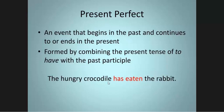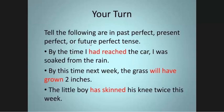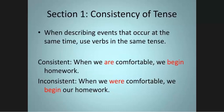Future perfect means you use will have. In this one, we're talking about an action that will be finished in the future before another one. We have 'had reached'—that's past perfect, 'will have grown'—that's future perfect, 'has skinned'—that's present perfect.